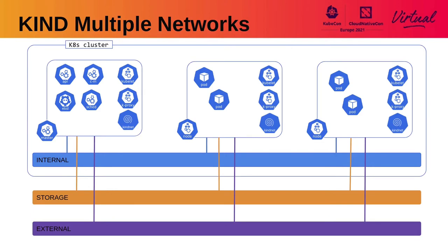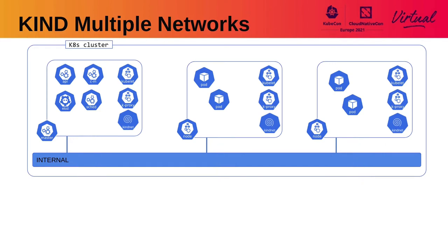One of the most common requests in Kind that hasn't been implemented officially is to be able to simulate nodes with multiple interfaces and multiple networks. This is common in bare metal scenarios when you want to provide different networks for different functionalities — for example, a storage network and an external network. Let's explain how we can create a plugin to extend Kind without having to have the feature in the Kind project itself.